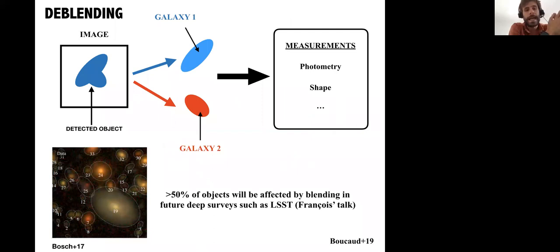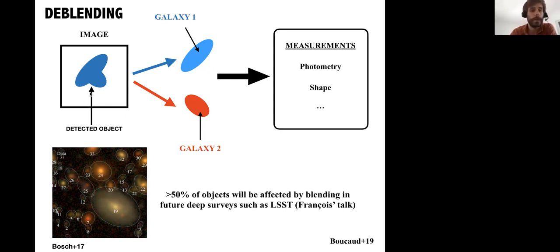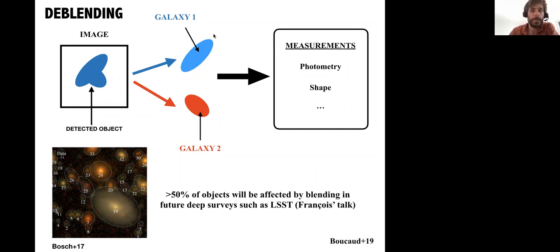The third example I was talking about — where I think things are progressing — is everything to do with detection of objects. A problem that happens a lot in deep imaging is what we call the blending of objects. As we have deeper and deeper images, the chances that two galaxies or objects overlap are high — especially in LSST, where more than 50% of objects are expected to blend. If you don't detect these blendings and you want to do precision cosmology by measuring shapes of galaxies, this is a significant addition to your error budget that can affect your scientific conclusions. Machine learning can also help here, and there are many people starting to work on this.